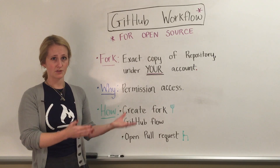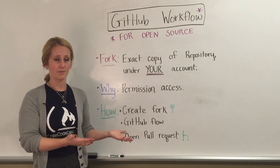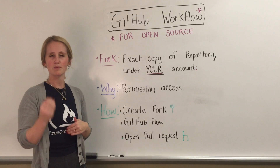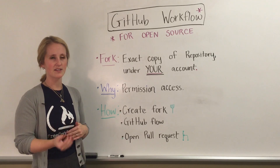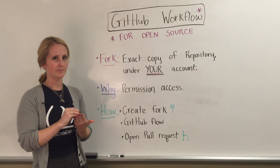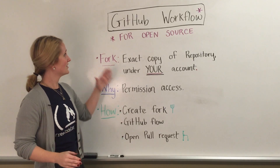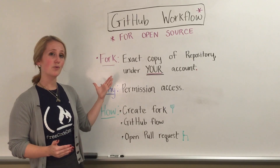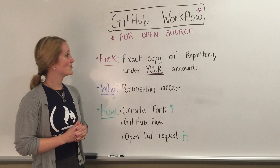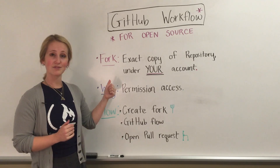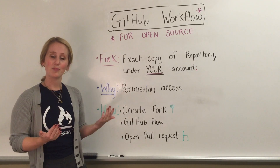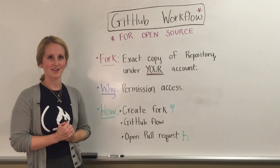The original repository would be under FreeCodeCamp; my fork would be under my name. When we're using the branching process, everything is still a part of that same repository. So just to review, this fork and pull workflow is really helpful in open source. It includes creating a fork of the repository, making commits there, and then opening a pull request against the original repository.